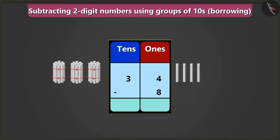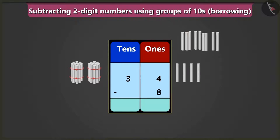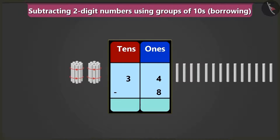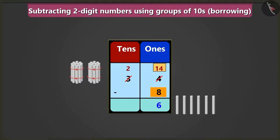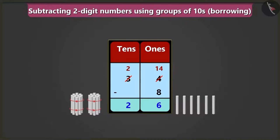We cannot subtract a big number from a small number. So we will borrow one ten from the box of tens. That means the number in the place of ones can borrow one ten from its neighbor. Now we will write one ten and four ones — fourteen — in the box of ones, and we will write two tens instead of three tens in the box of tens. Now if we subtract eight from fourteen in the place of ones, we get one, two, three, four, five, and six left. So we write six in the place of ones. We have two tens in the place of tens, so the answer will be twenty-six.